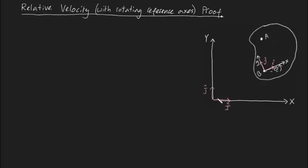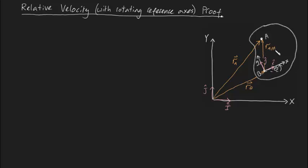First things first, let's find the absolute position of point B — this is R_B, the position of B relative to our fixed reference frame. And R_A is the absolute position of point A. The position of A relative to B is R_AB. From vector algebra, R_A is going to be equal to R_B plus R_AB.